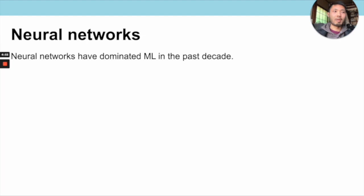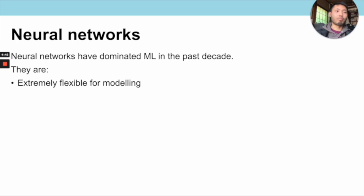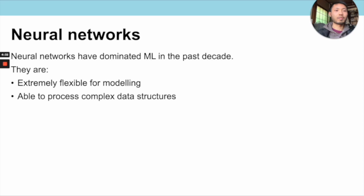Machine learning has seen a massive transformation in the past decade, largely due to the prominence of neural networks for modelling large, complex data. Their success can be attributed to several reasons, including their extreme flexibility for modelling arbitrary functions summarised in the famous Universal Approximation Theorem, their ability to process complex data structures such as images, language, and audio/video, the fact that they are composed of simple parallelisable components such as matrix multiplication that can be processed efficiently using modern hardware such as GPUs and TPUs, and lastly the development of automatic differentiation in frameworks such as TensorFlow and PyTorch.